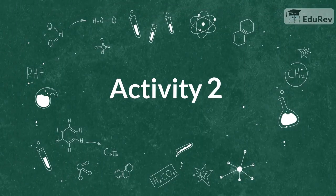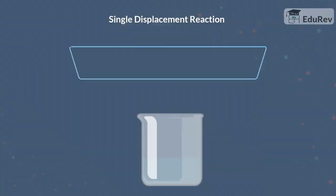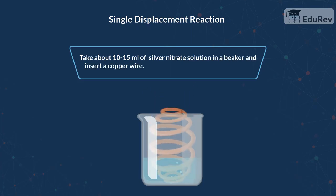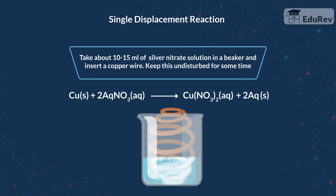Let's try another experiment. Take about 10–15 ml of silver nitrate solution in a beaker and insert a copper wire. Keep it undisturbed for some time. We can see some white particles falling off and the colour of the solution also seems to be changing from a transparent to a bluish colour. In this case, copper seems to have displaced silver from silver nitrate to form copper nitrate and setting silver free.